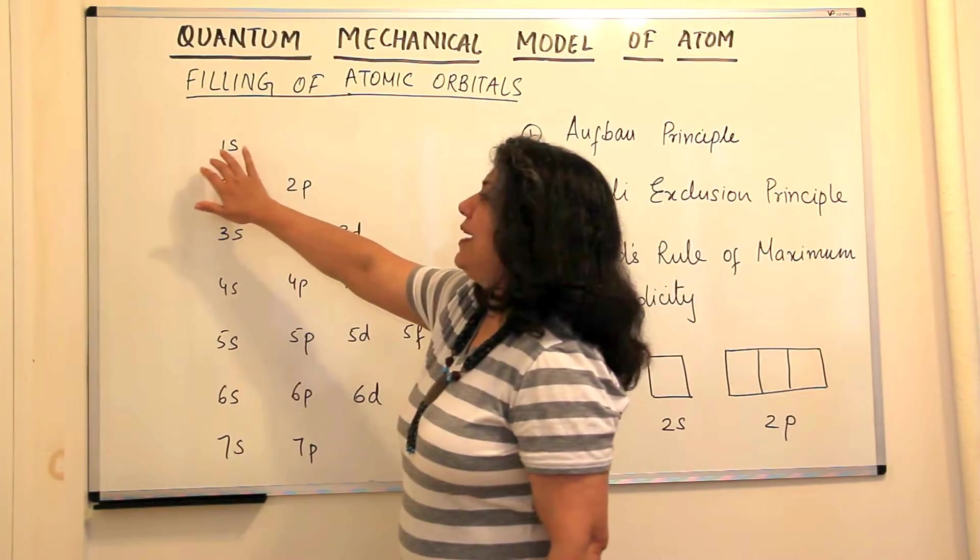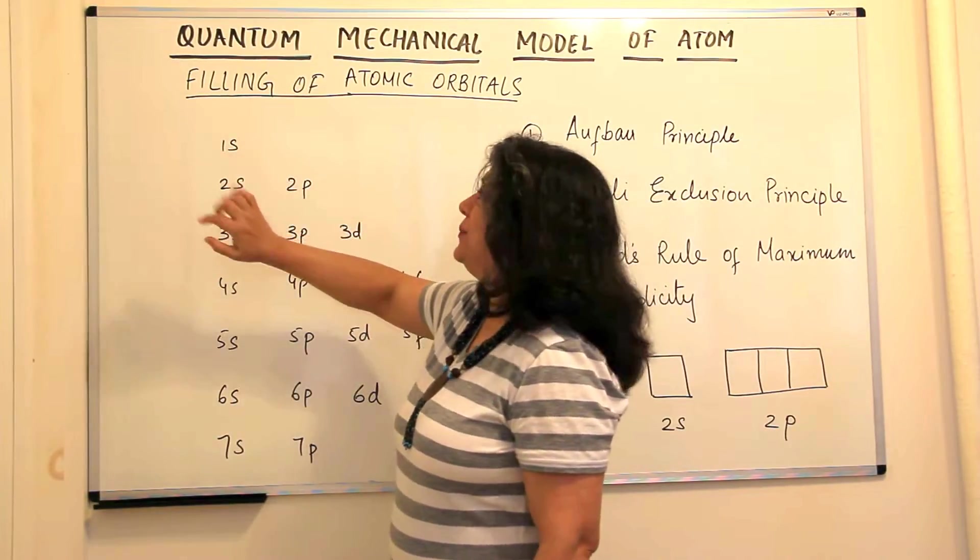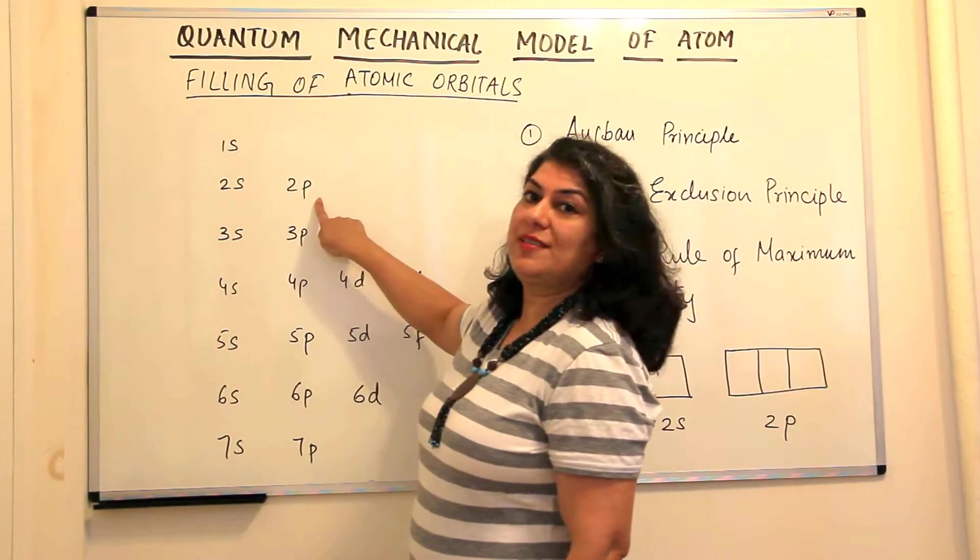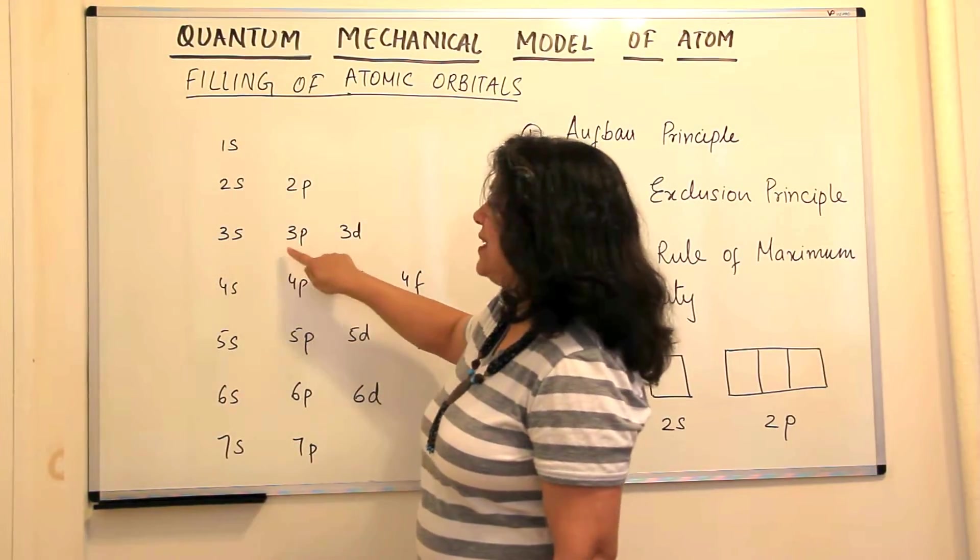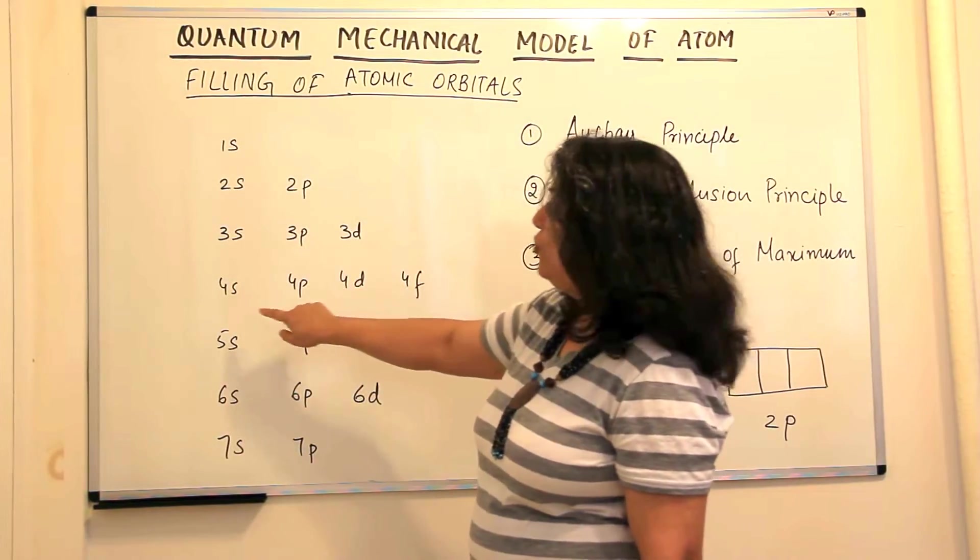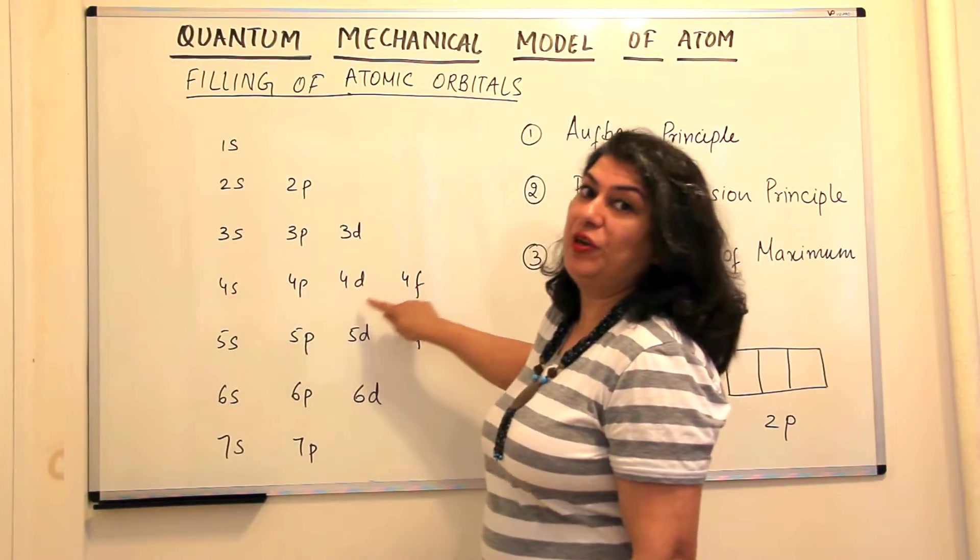The first shell has only one s orbital. The second shell has s and p orbitals. The third shell has 3s, 3p, 3d. The fourth shell has 4s, 4p, 4d, 4f.